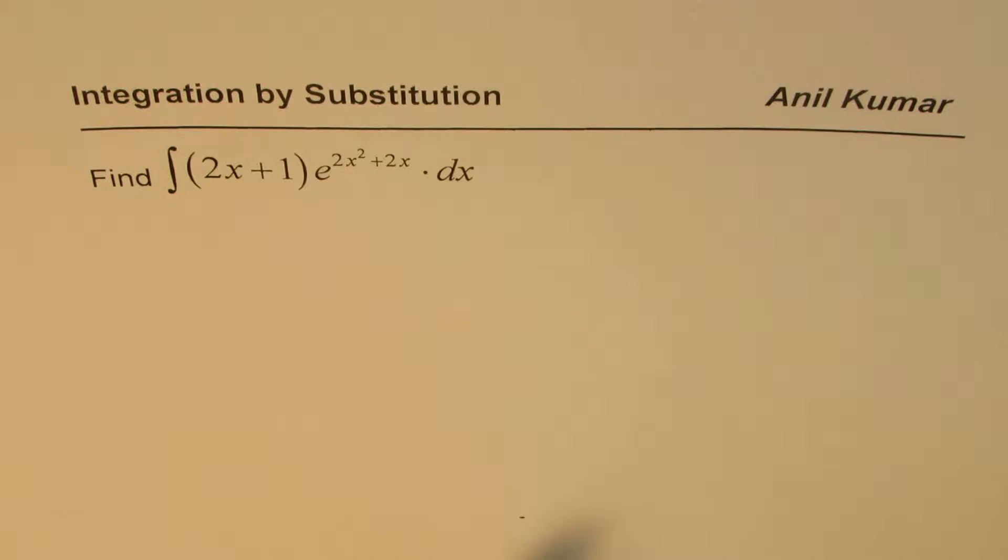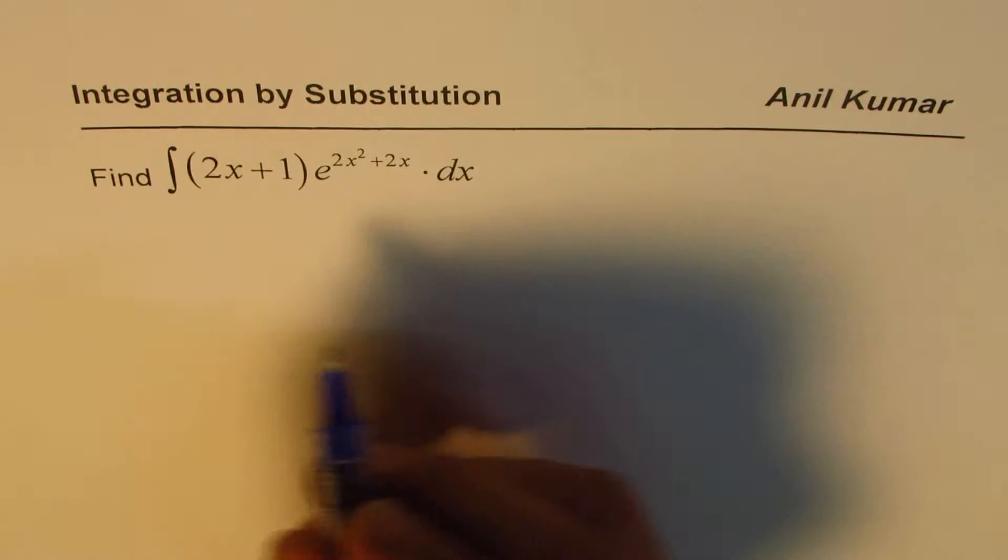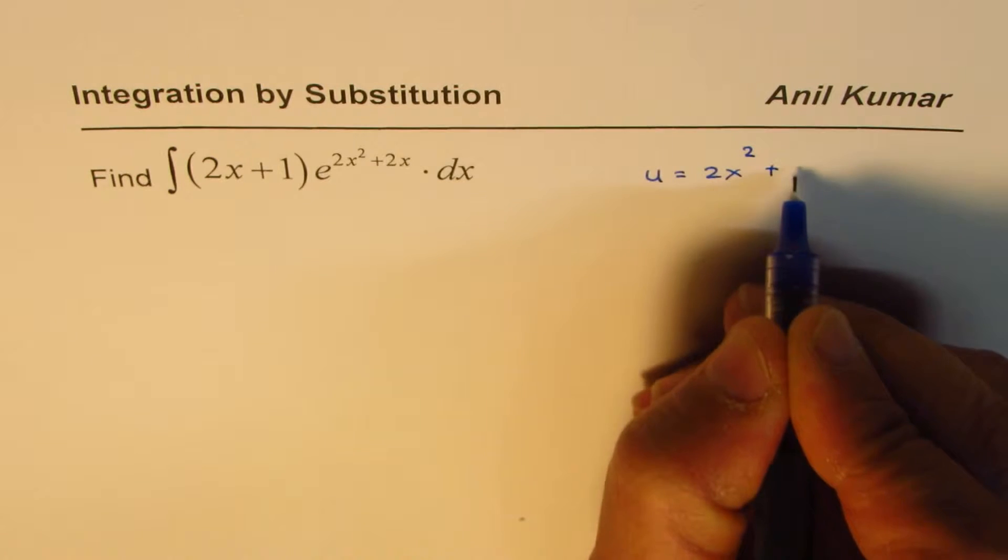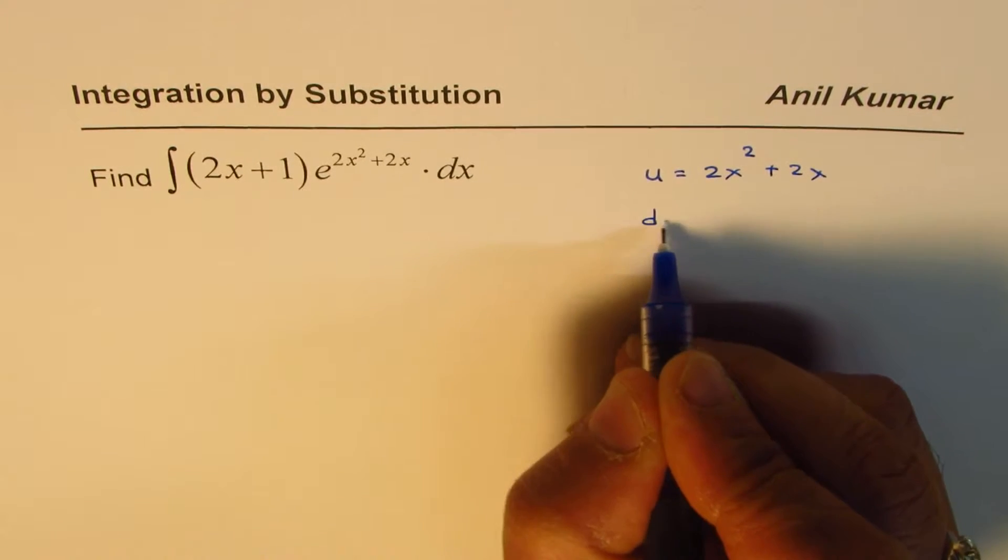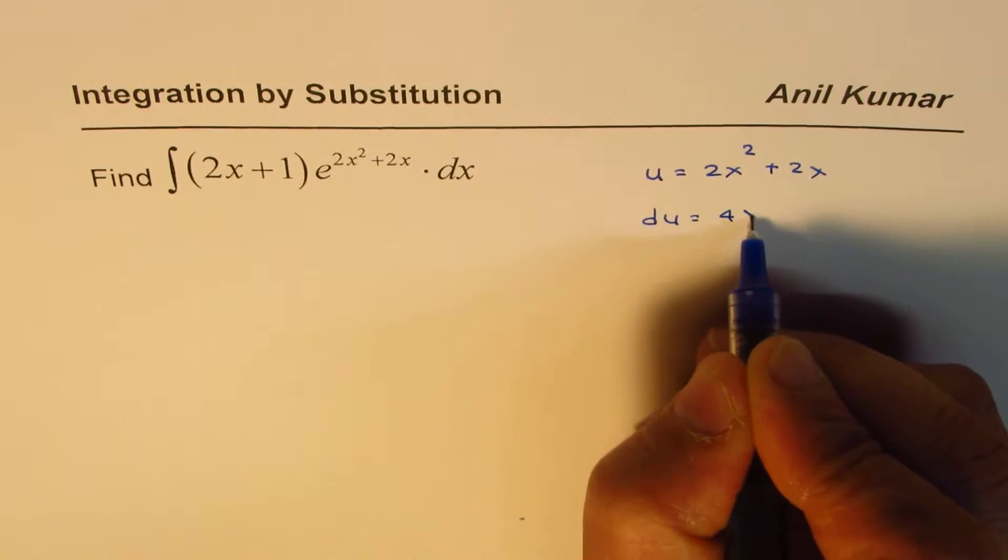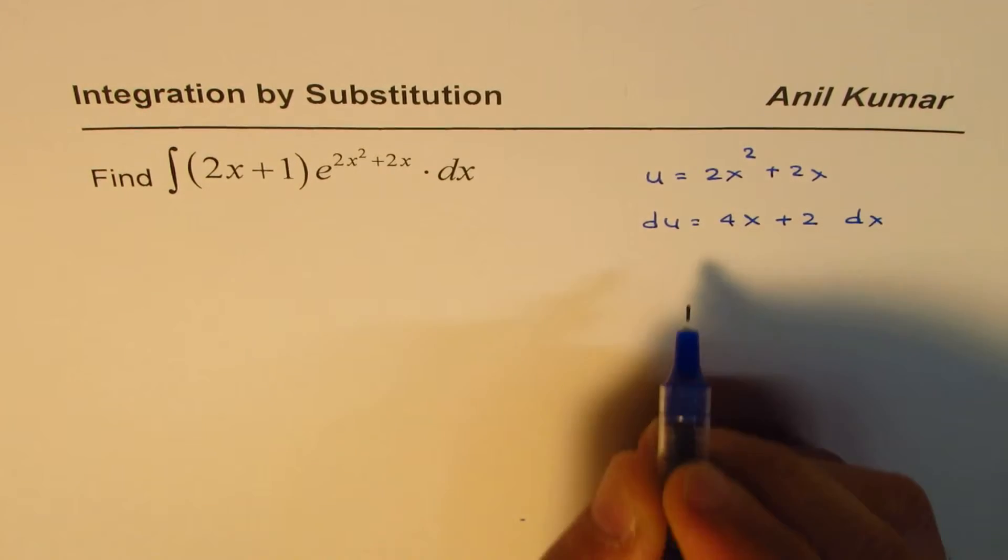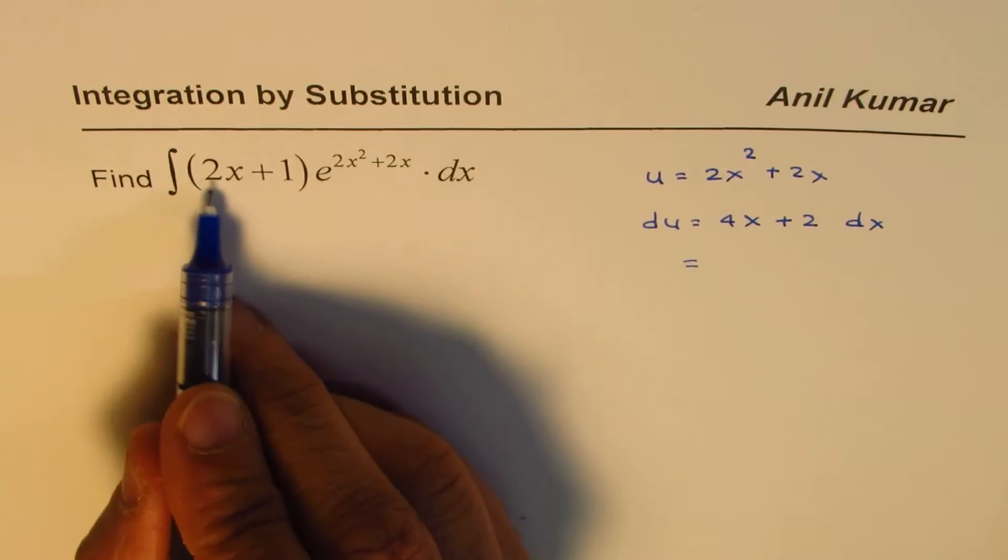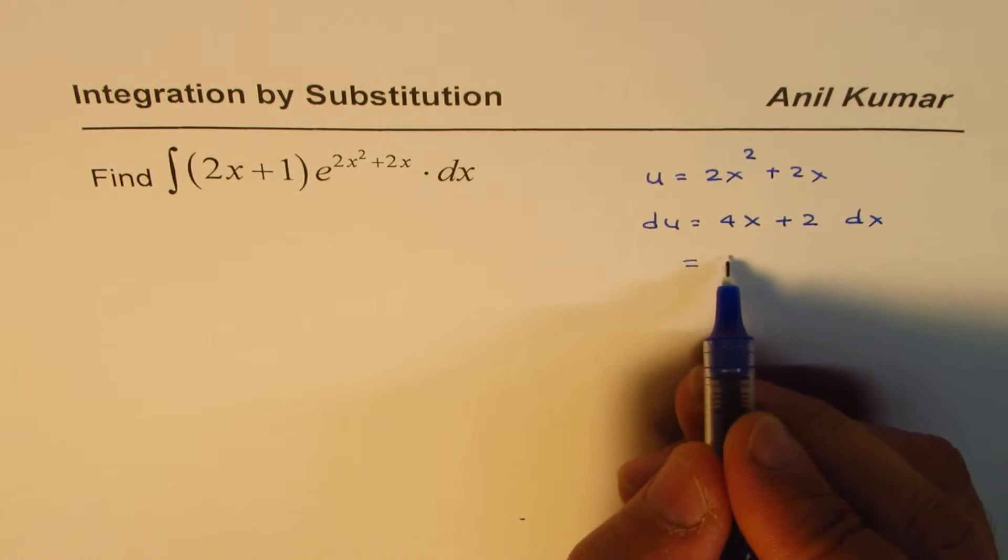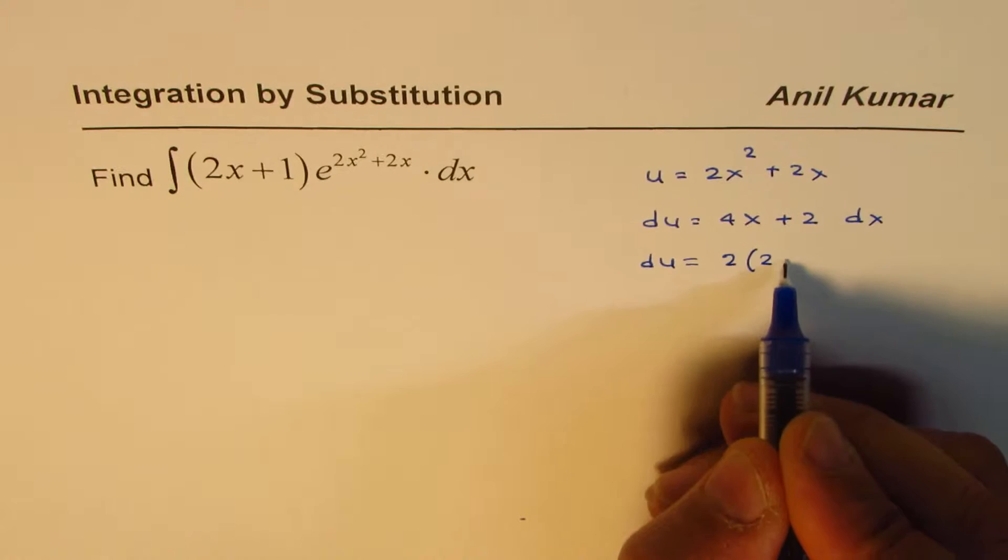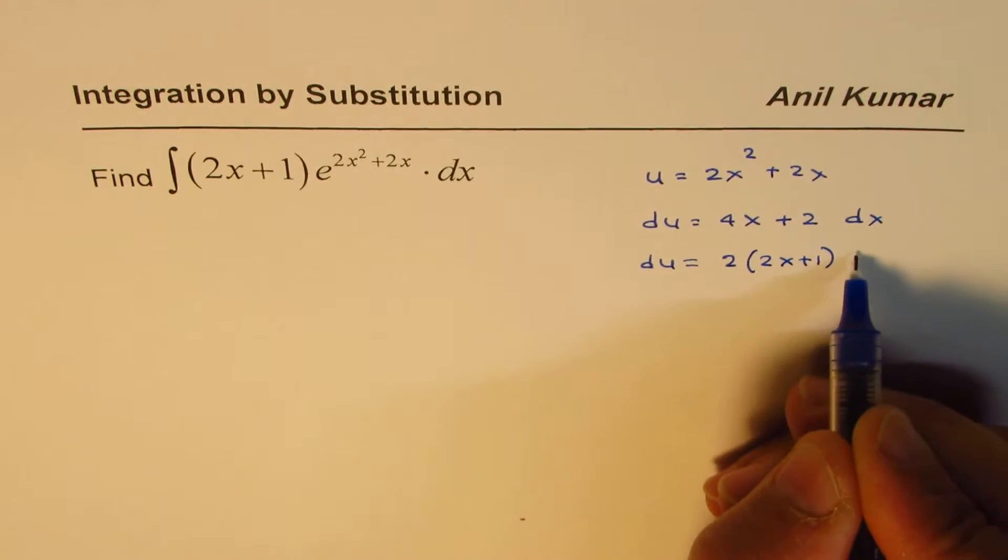So that gives us an idea that we could do substitution. If I write u equals 2x squared plus 2x, I get du equals 4x plus 2 dx. Now 4x plus 2 you could factor, so you can write du equals 2 times 2x plus 1 dx.